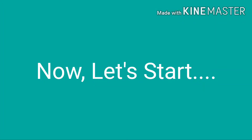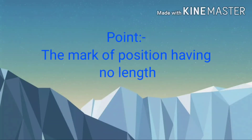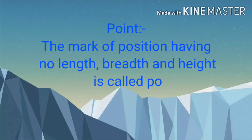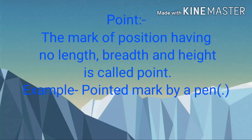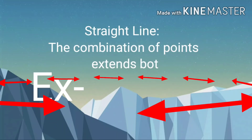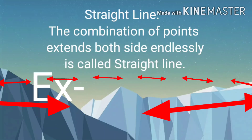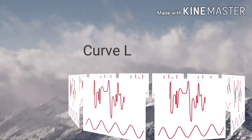Now let's start some basic concepts about this chapter. Point: the mark of position having no length, breadth, and height is called a point. Example: a pointed mark made by a pin is known as a point. Straight line: the combination of points that extends on both sides endlessly is called a straight line.